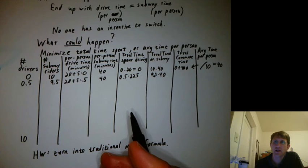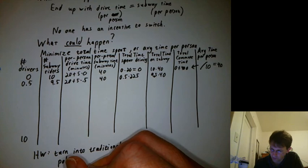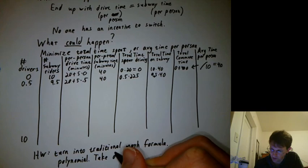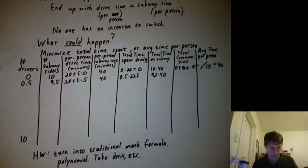The good news is you get a polynomial. It's kind of a not super simple polynomial, but also not terribly complicated. So you get a polynomial. Then you take the derivative, set the derivative equal to zero, and solve.